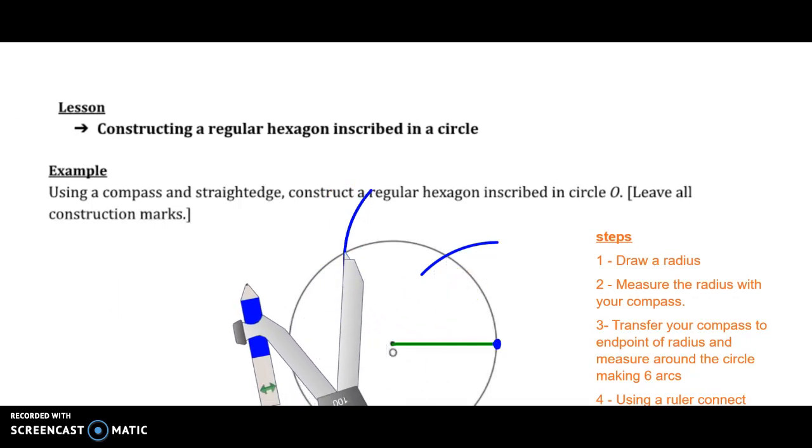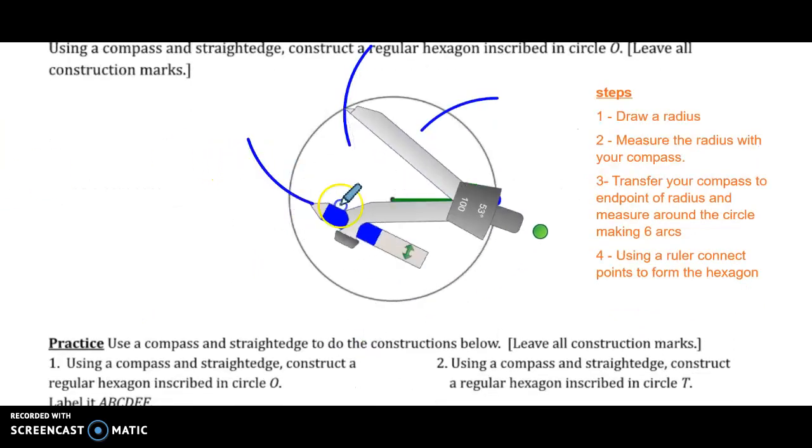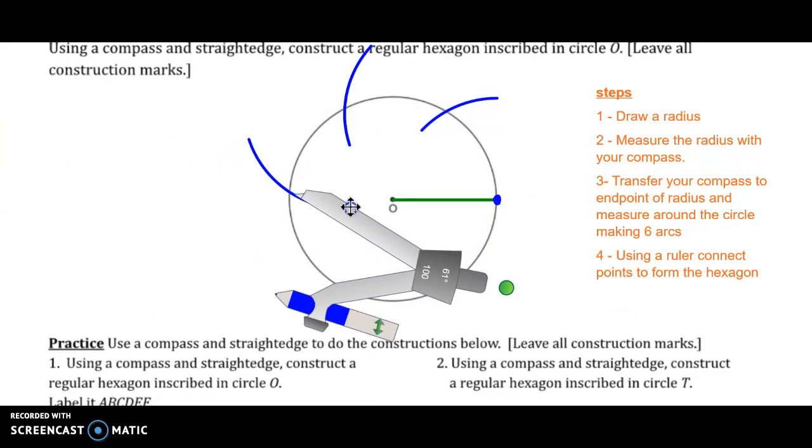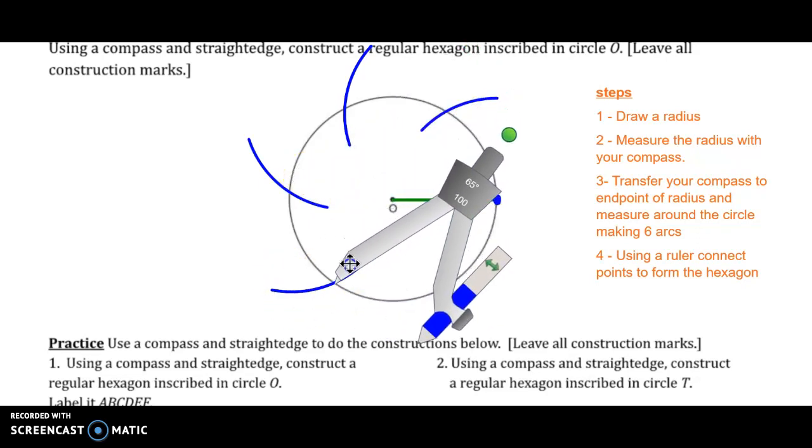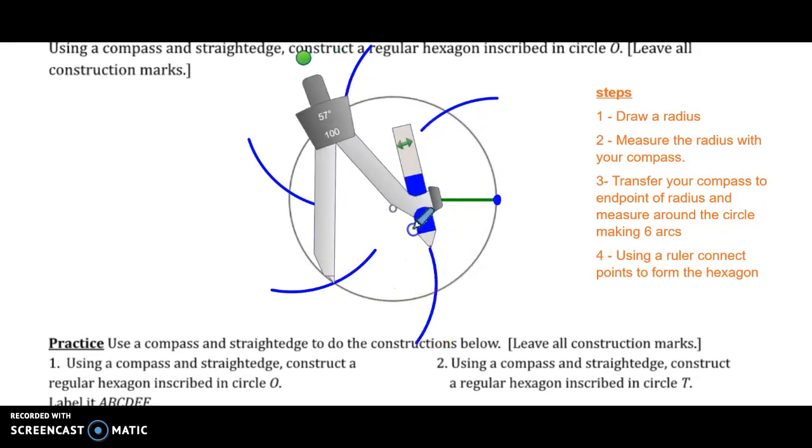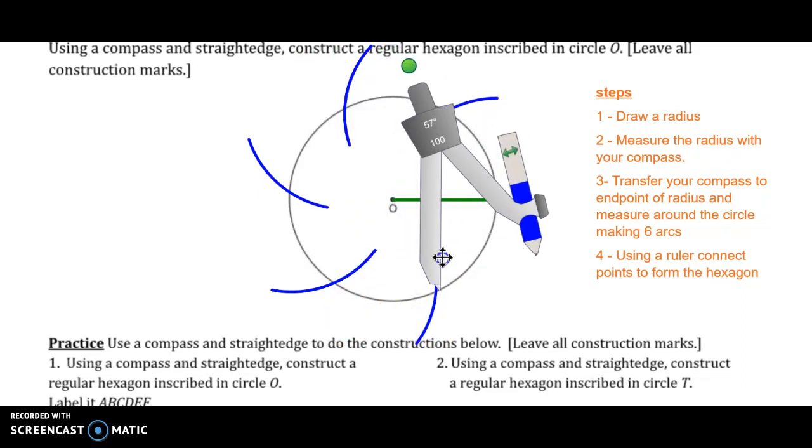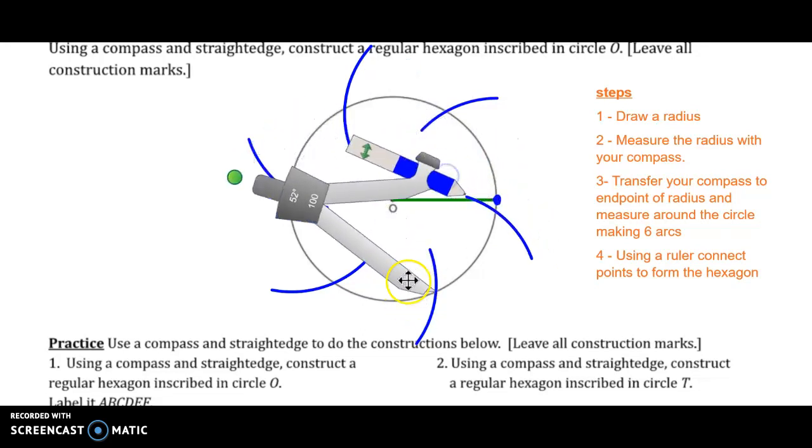And I make another arc the same length. Now I transfer it to that one and make an arc the same length. Then I transfer it to the next one, make an arc the same length. Transfer it again, make an arc the same length. Transfer it again, make an arc the same length. Transfer it again. This should end up on your radius.